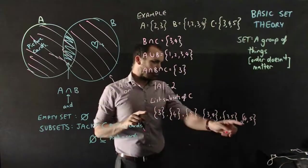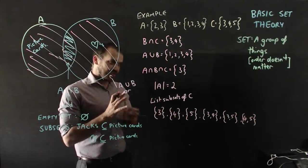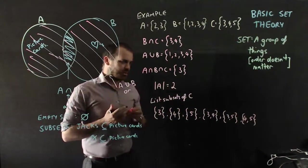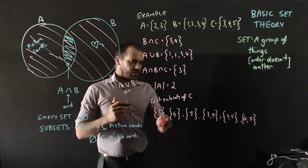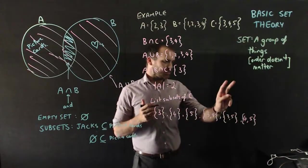Now, it might be tempting to say, what about {4, 3}? {3, 4} and {4, 3} are the same set because order doesn't matter when we're talking about sets. I've got {3}, {4}, {5}, {3, 4}, {3, 5}, {4, 5}.